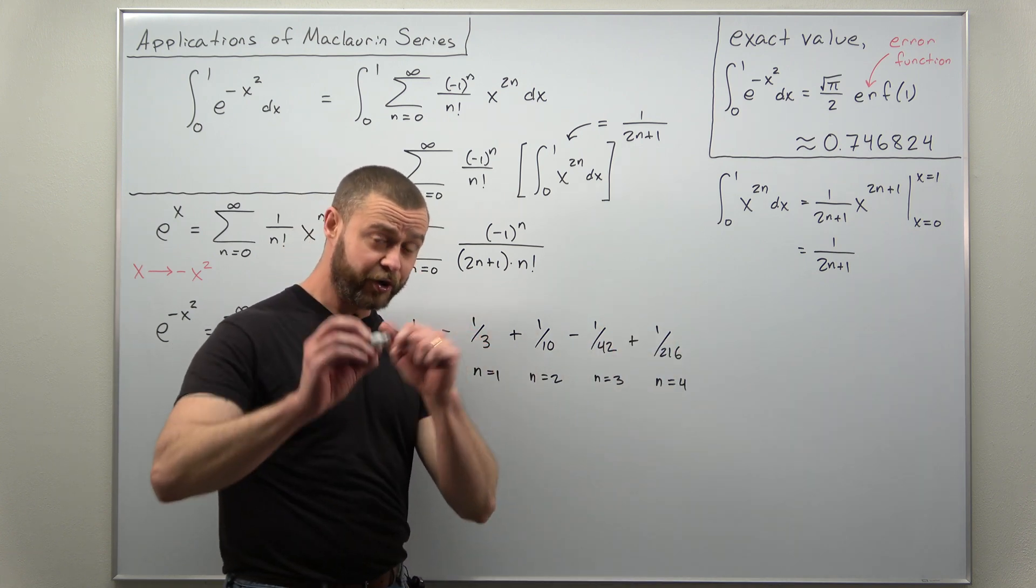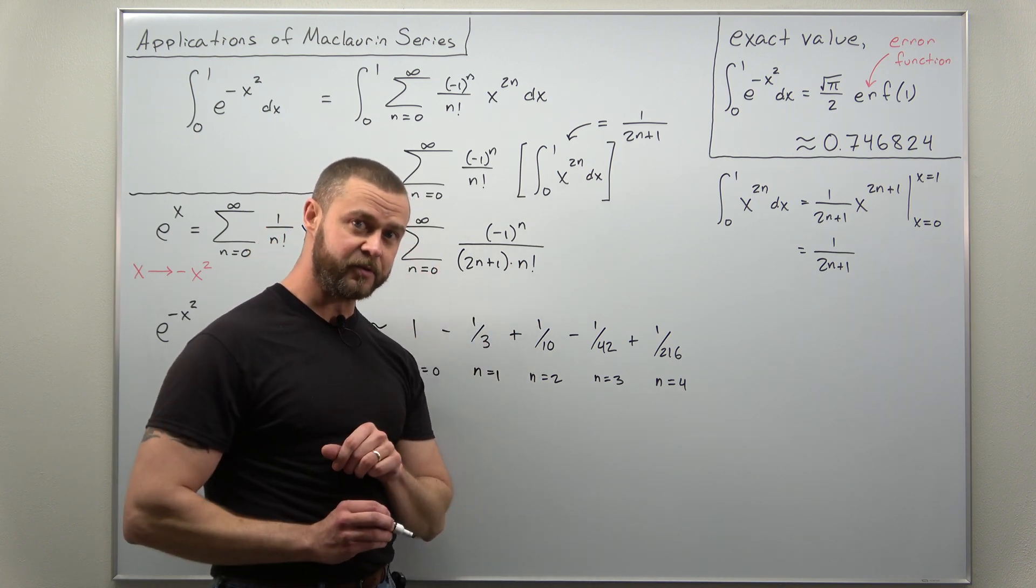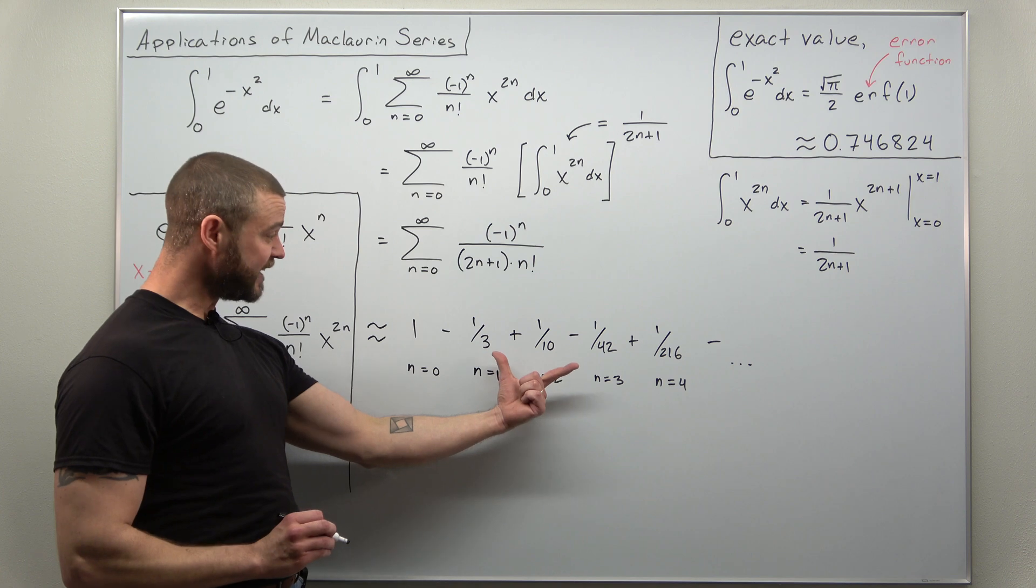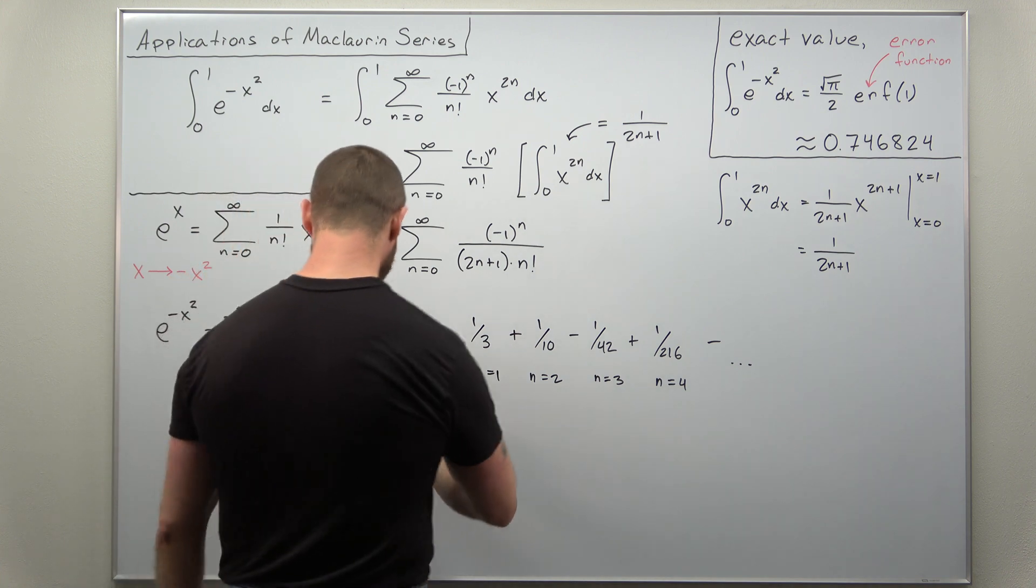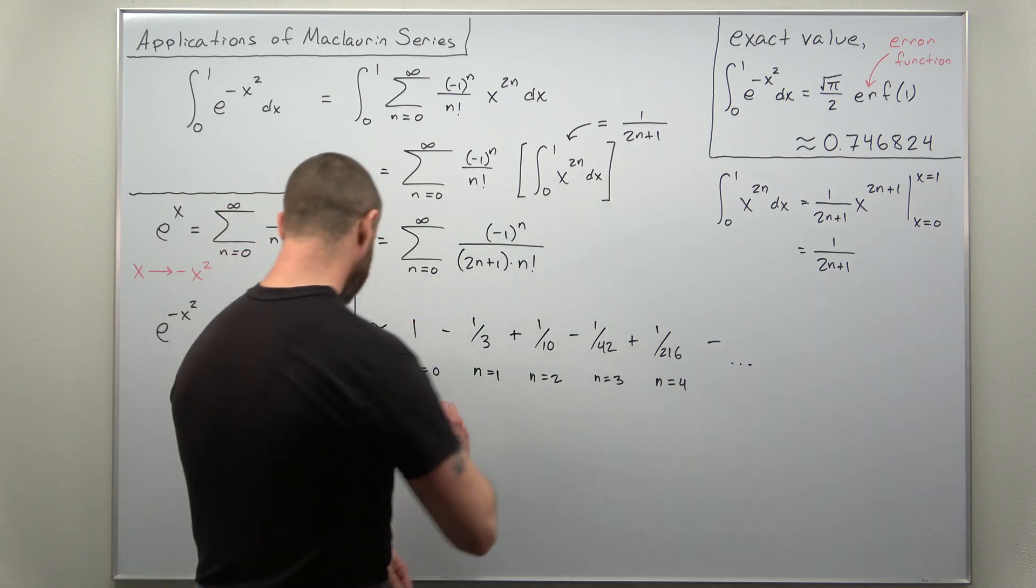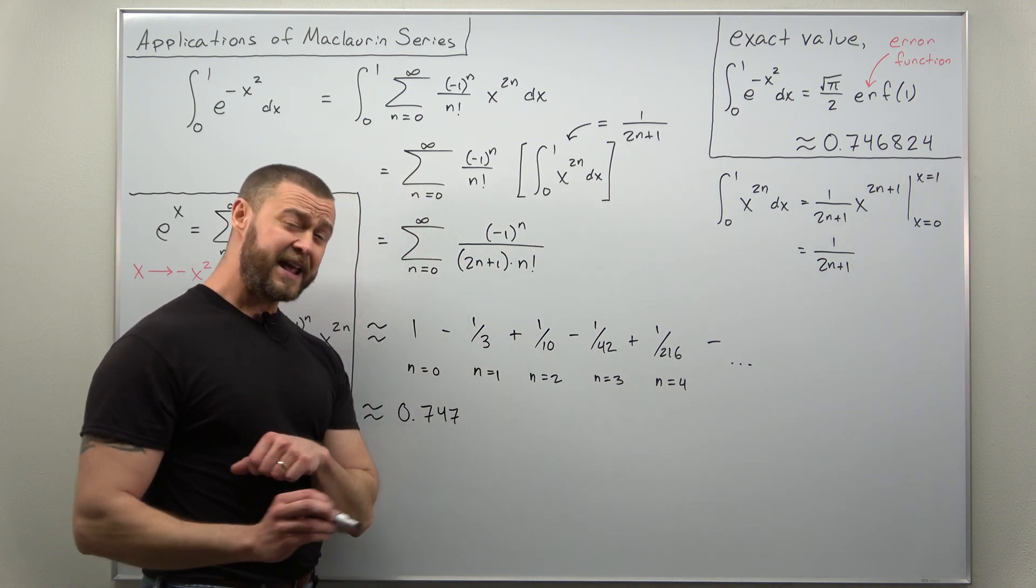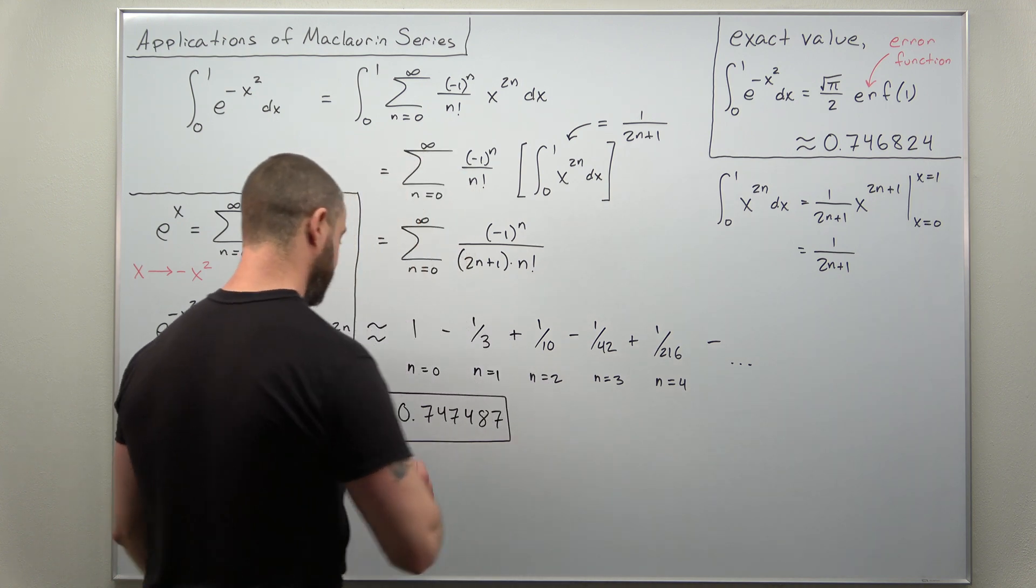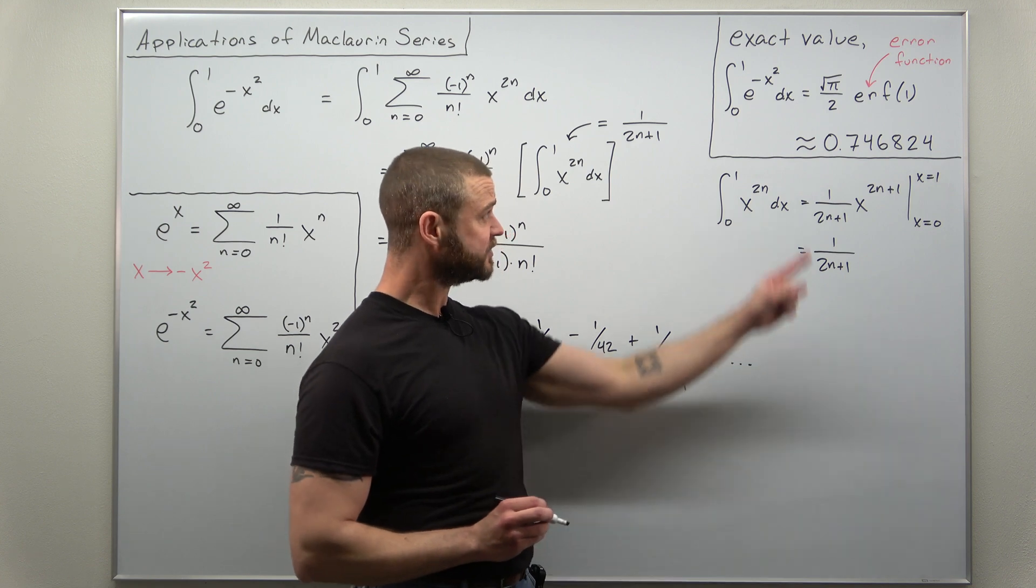Now if you want you can keep going with more terms there. The more terms you include from your infinite series, the more accurate your approximation becomes, so you would have the next one as being minus and you could keep going. But if we just take these first five terms and then add and subtract them all together, what we'll find is this comes out to approximately an answer that's pretty close to that. We get 0.747487, and that is pretty darn close to the value you get with more complicated mathematics, again the error function.